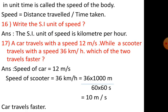Number 17. A car travels with a speed of 12 meter per second. While a scooter travels with a speed of 36 kilometer per hour. Which of the two travels faster?